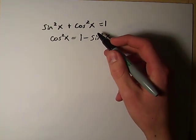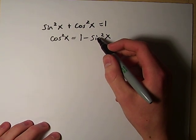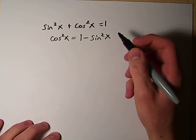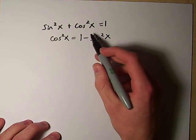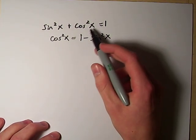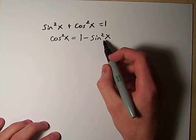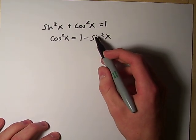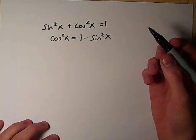Now, instead of 1 minus sine squared x, you might see the factored version of this, where we have to realize that this is simply the difference of two squares. We have 1, which squared is still 1, and sine squared, and a minus sign. So we can factor this by difference of squares.